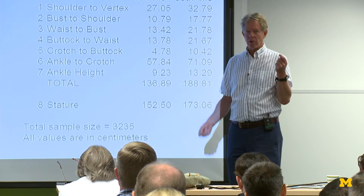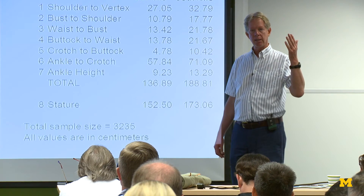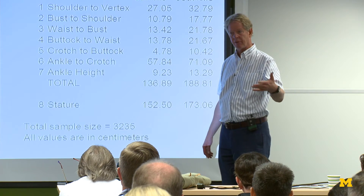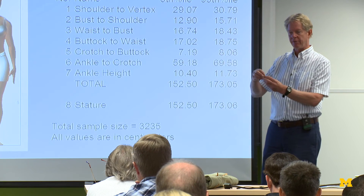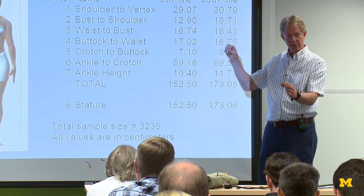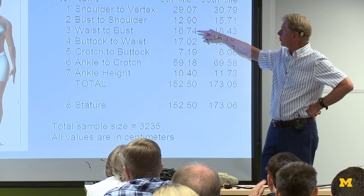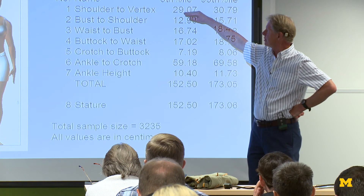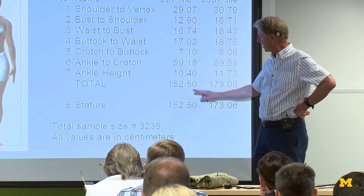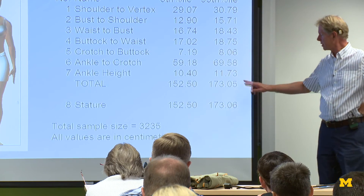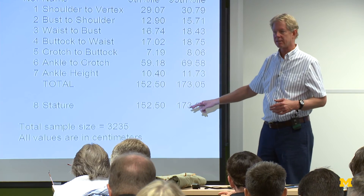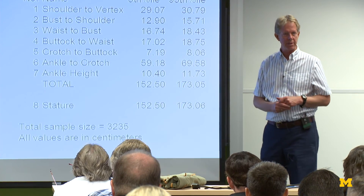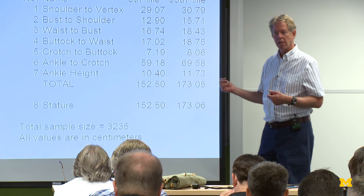Whenever you get a requirement like that, you need to go back to whoever wrote it and ask: 5th percentile what? 5th percentile stature? 5th percentile weight? 5th percentile hand length? What are we doing? Depending on your application, you can use regression equations to help solve that problem. If you recall the very tight relationship between cervicale height and stature, using a similar approach we could take our 5th percentile stature and predict shoulder-to-top-of-head and bust-to-shoulder from it. If we do that and then add them up, they do add up — nearly the same thing at the other end too. Any one of those segment values is not the 5th percentile value, but you have a 5th percentile stature with parts that add up to it. Depending on what your question is, this may be an approach worth using.